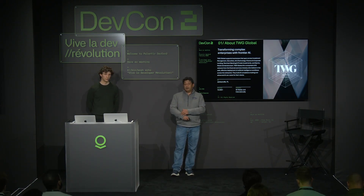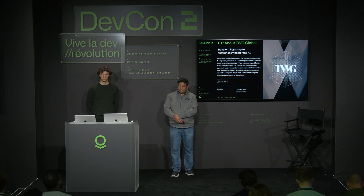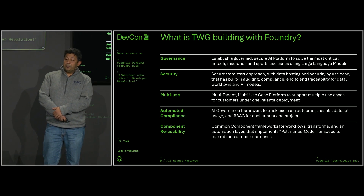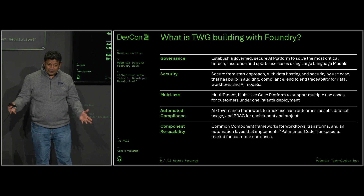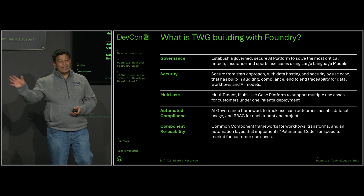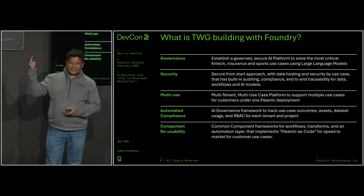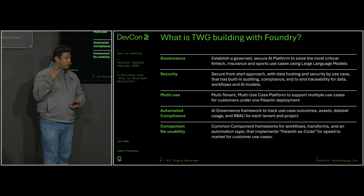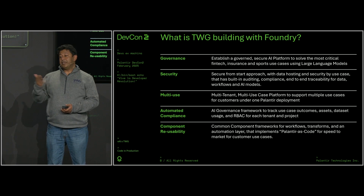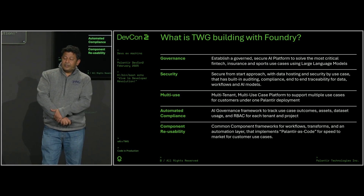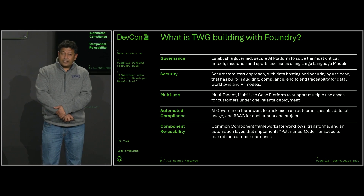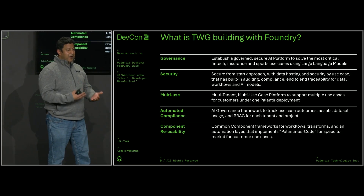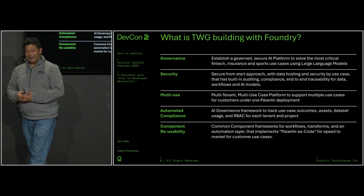What we're building out is a platform that supports multi-tenancy and multi-customer. We're already at six ontologies on our instance, and we're really trying to build out an internal developer platform out of Palantir to support N number of use cases, just scaling out horizontally. Our SLAs are: you onboard to a project in less than a minute, prototype in less than a day, and get to production in less than a week. We're hyper-focused on compliance and governance because we have to comply with PCI, and regulators always want more audit, explainability, and traceability.